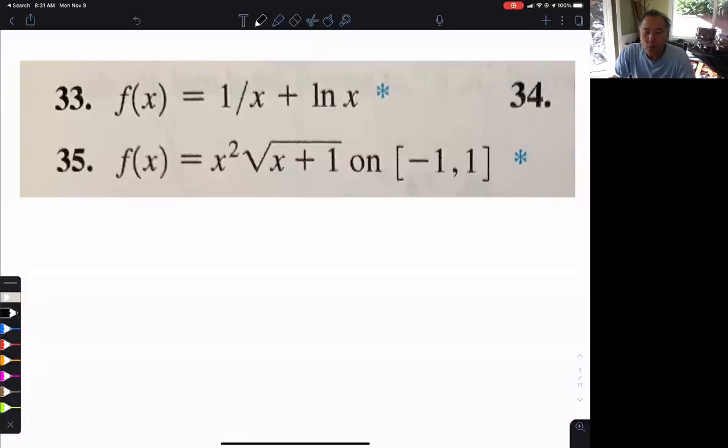So this is 4.1, number 33. They're asking for critical points. Critical points are values of x where the derivative equals 0 or does not exist. So obviously we need the derivative.